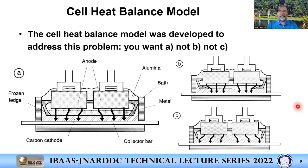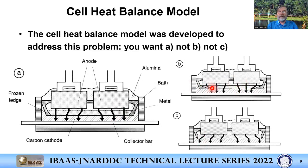The first model is the cell heat balance model. You essentially want to control the superheat and the ledge thickness indirectly, because the pot decides about those things. You have to design the heat generation and heat dissipation so the pot will operate at a practical superheat of about 10°C with ledge thickness about 4 to 10 centimeters. Too much is bad for MHD instability; too little is bad for pot life, because there's not enough protection on the side.